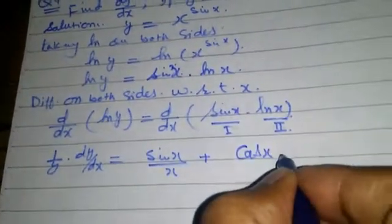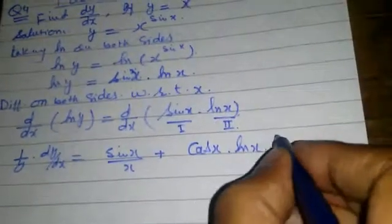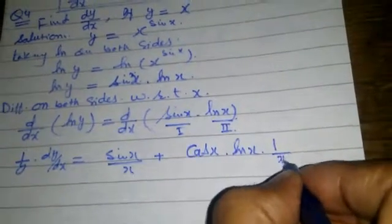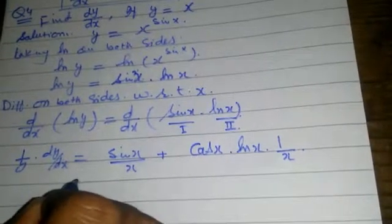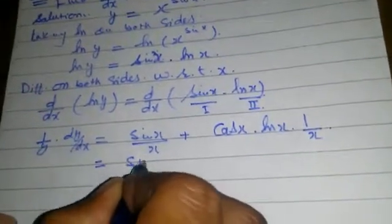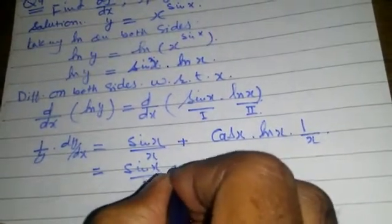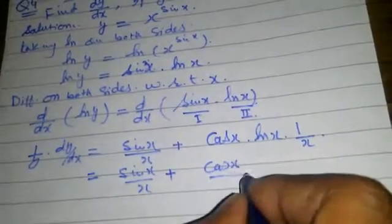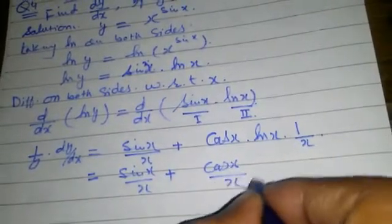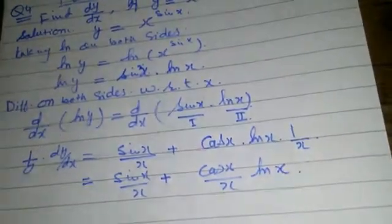This simplifies to 1 over y times dy by dx equals sin x over x plus cos x times log x. Therefore dy by dx equals y times (sin x over x plus cos x log x).